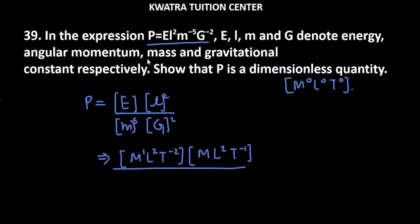Then you have M, which is mass. The mass unit is M¹, but here the power is 5, so we write it as M⁵.